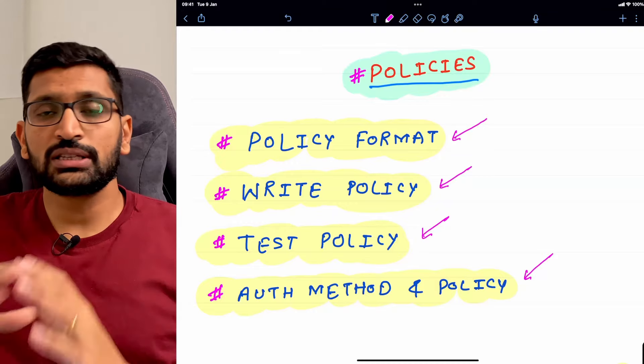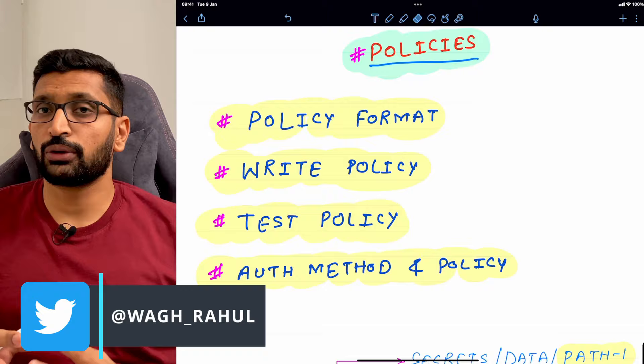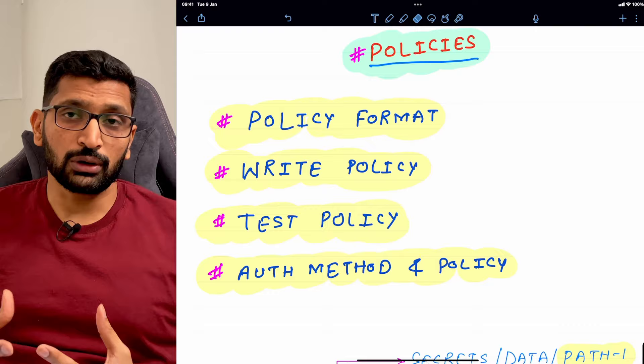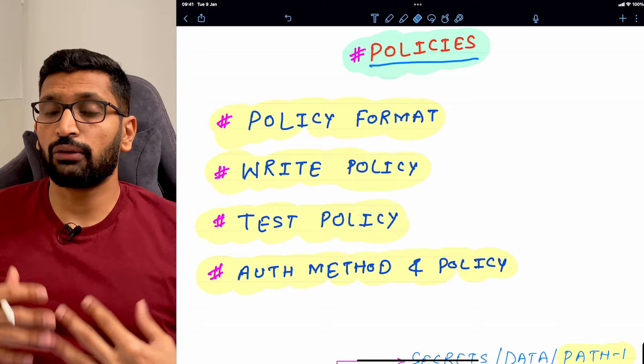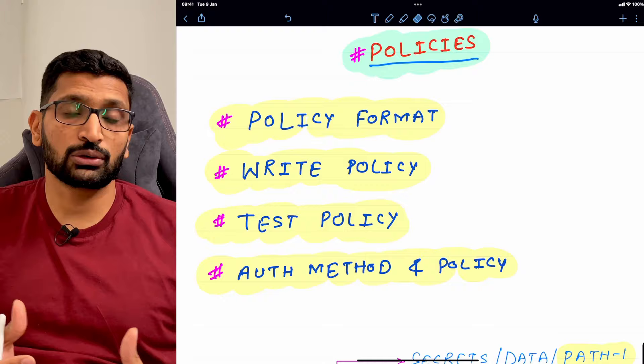In this session we are going to talk about HashiCorp vault policies. We will look at the policy format and how you can create a policy file. We'll cover how to write a custom policy, how to test that policy, and finally we'll look at auth methods and how to associate a policy with an authentication method.